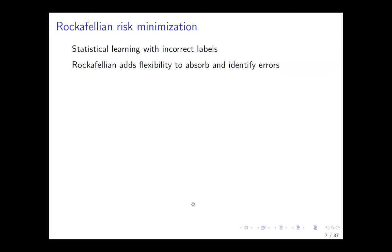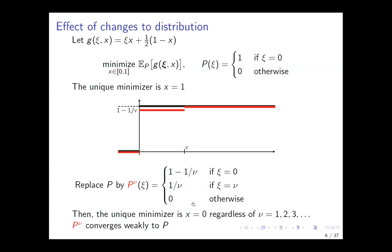George asks: in that previous plot, you want nu to be greater than one, right? Because at one, you recover exactly the same problem. Exactly — I think about mu going to infinity. For nu equal to one, we are kind of back to where we started, and then it keeps going bigger than one. So nu has to be greater than one, yes.